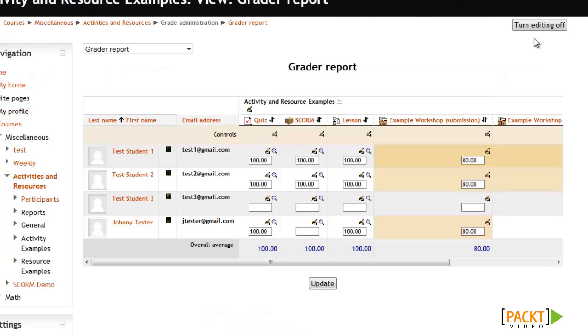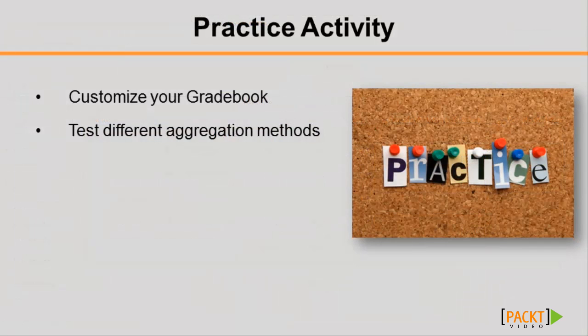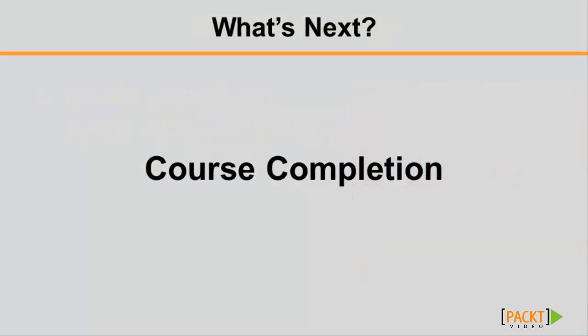That's how you can change how scores are calculated and the overall look and feel of the gradebook. Time for a little practice: customize the gradebook for your course so it works best for each activity. Make sure to think about what type of aggregation method you want to use and how much you want each activity to be worth towards your final grade. In this video, you learned how to customize the gradebook for the purposes of your course. In the next section, we'll talk about how you and your students can track their progress towards completion of the course. That's it for now and I'll see you in the next video.